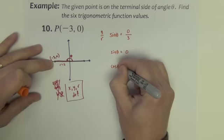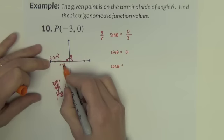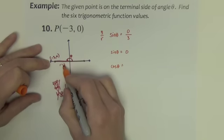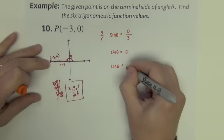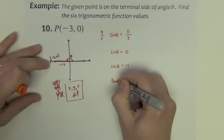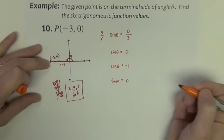Cosine of theta. It is the x divided by r. So negative 3 divided by 3 would be negative 1. The tangent of theta is the y divided by the x. 0 divided by negative 3. 0.